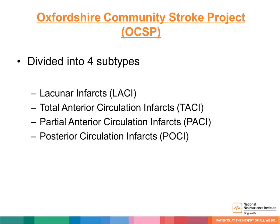The Oxfordshire Community Stroke Project studied the population of patients with first-ever stroke in an English county. Patients with ischemic strokes were divided into four subtypes based on their presenting clinical signs and symptoms, correlated with the site of vascular occlusion and the site of the infarct.